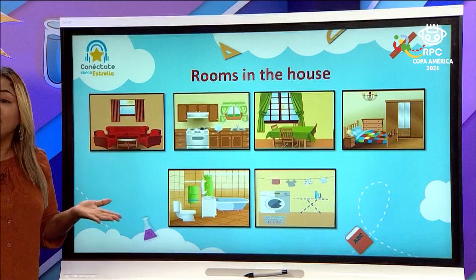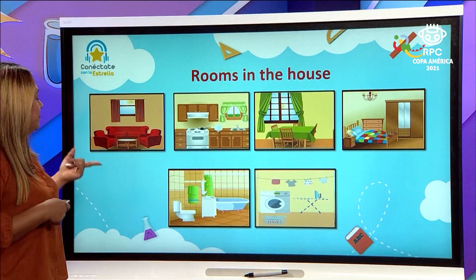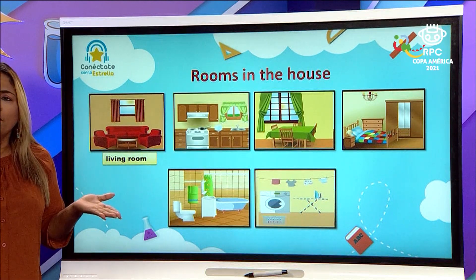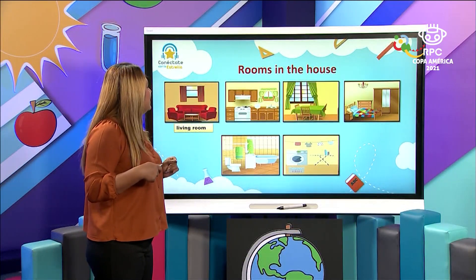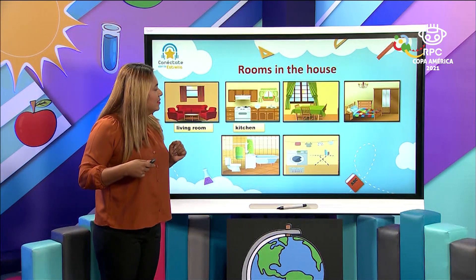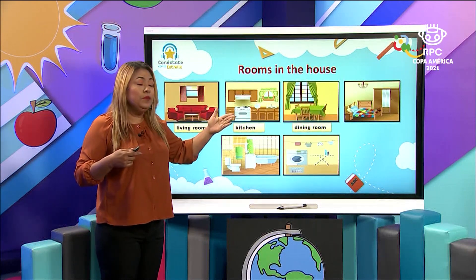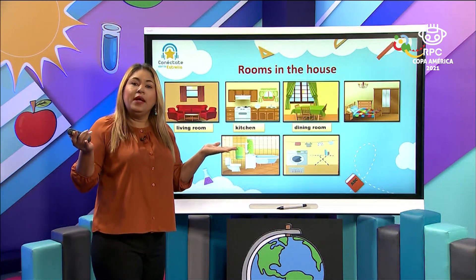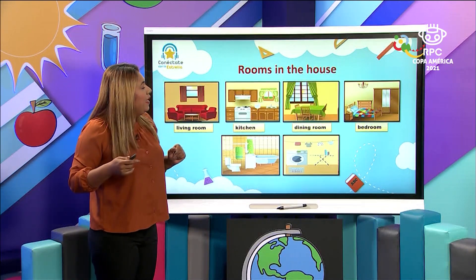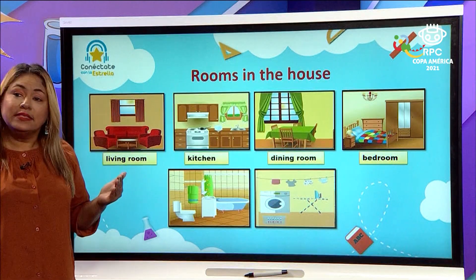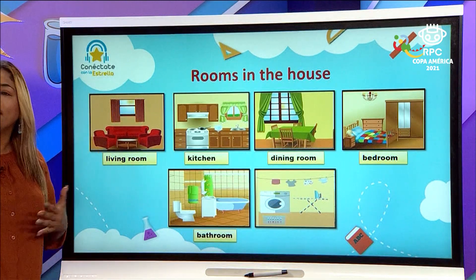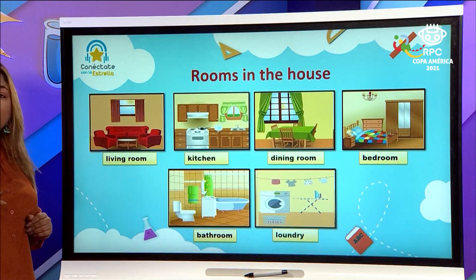Do you remember about the rooms in the house? This is the living room. What can you do in the living room? Yes, you can sit on the sofa. In the kitchen, you can prepare a delicious breakfast. Then we have the dining room. What can you do in the dining room? You can sit at the table to eat your delicious breakfast. And the bedroom — it's a place where you are going to rest, you are going to sleep. Then we have the bathroom; you can take a delicious shower in the bathroom. And we have a new place: the laundry.